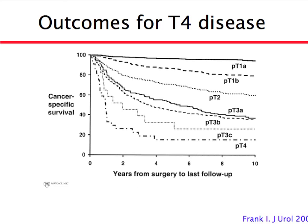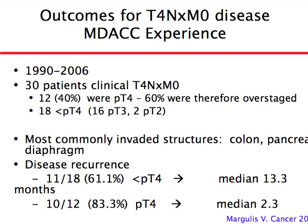On a Kaplan-Meier survival curve, the y-axis shows survival and the x-axis shows time. The bottom curve — T4 — represents the highest chance of not surviving. T1A tumors, the small localized tumors, are the top curve. Our experience over 16 years with 30 patients clinically thought to have invasion into other organs showed that only 40% had true invasion. Remarkably, 60% did not — these patients were overstaged. We could only discover this by taking them to surgery.